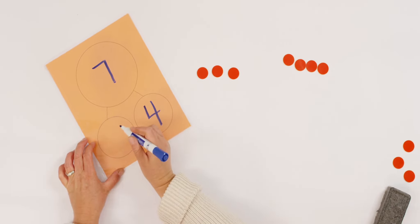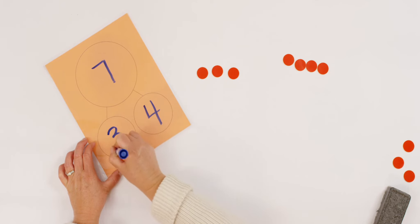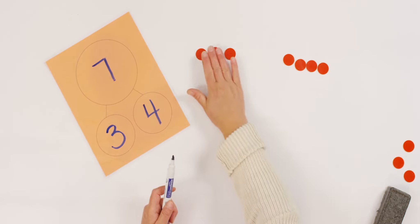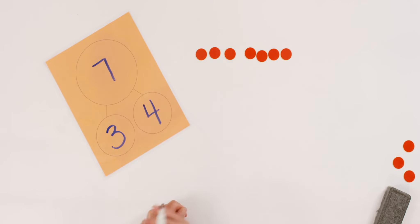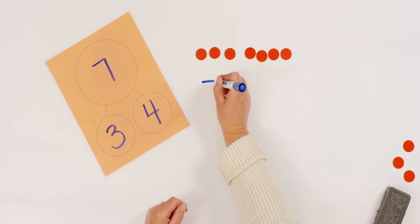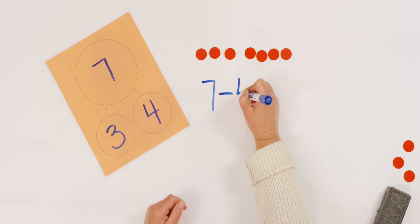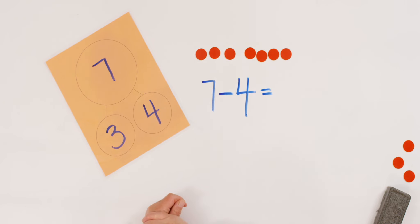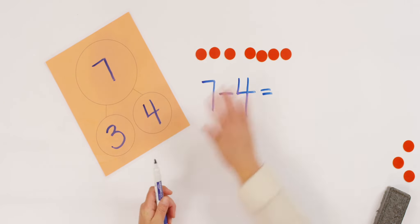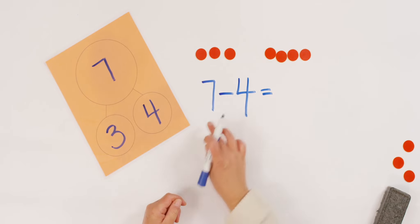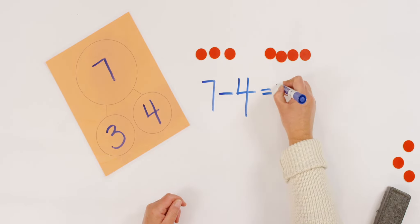Did you already know that before I even did this? So let's show it. When we write a subtraction problem, what do we start with? The whole number — and that was seven. So let's write it: seven. How many dropped on the ground? Four lollipops dropped on the ground. Is it plus or minus? Minus. Minus four leaves me how many? Three. I showed it again with my counters. Seven minus four equals three.